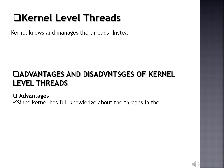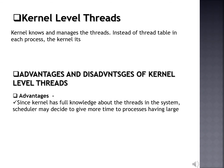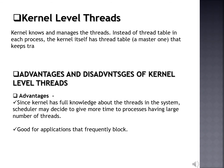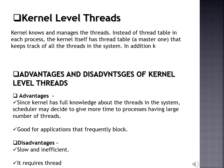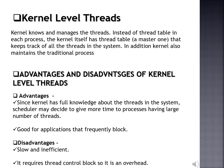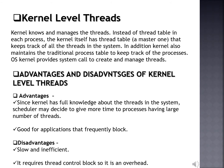The other type of thread is kernel level threads. In this case, thread management is done by the kernel. There is no thread management code in the application area. Kernel threads are supported directly by the operating system; any application can be programmed to be multi-threaded. All the threads within an application are supported within a single process. The kernel maintains context information for the process as a whole and for individual threads within the process. Scheduling by the kernel is done on a thread basis. The kernel performs thread creation, scheduling, and management in kernel space. Kernel threads are generally slower to create and manage than user threads.